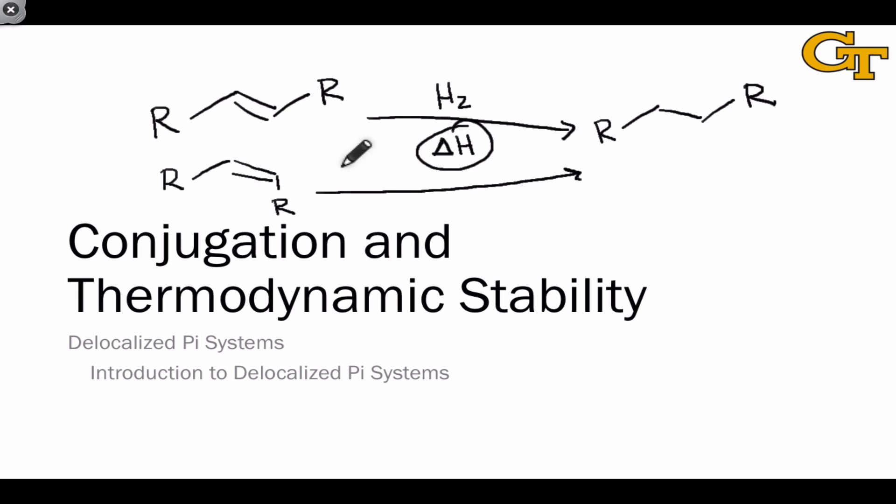For example, in this particular case, we would expect the delta H of hydrogenation for the cis isomer to be greater than the delta H of hydrogenation for the trans isomer, since the cis isomer is less stable and higher in energy itself.